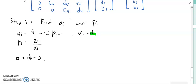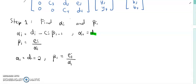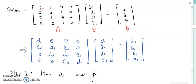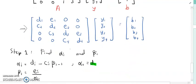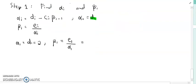And then you must find beta_1. Beta_1 equals E_1 over alpha_1. So what is E_1? E_1 value is this number: 1. So 1 over alpha_1, which is 2. So beta_1 is 1 over 2.